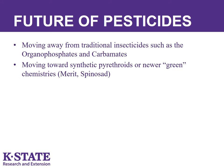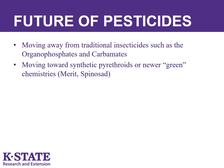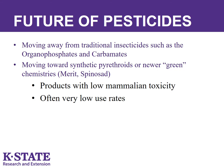The greatest impact of re-registration is on insecticides due to the fact that humans and insects have nervous systems that may be negatively impacted by these products. Therefore, we are moving away from traditional insecticides such as organophosphates and carbonates and moving towards synthetic pyrethroids or newer green chemistries such as Merit and Spinosad. These are products with low mammalian toxicity and often have very low use rates.